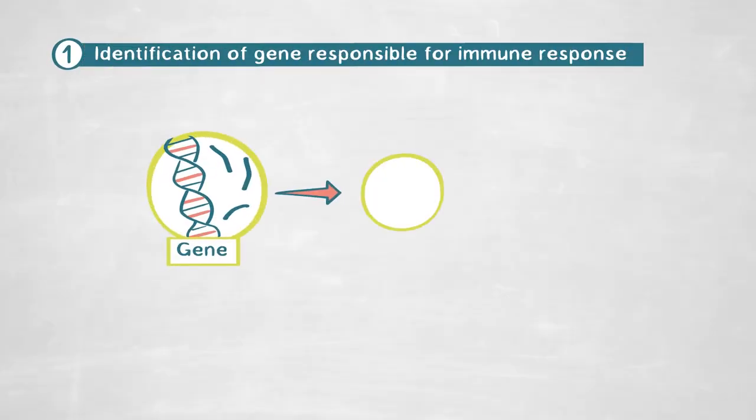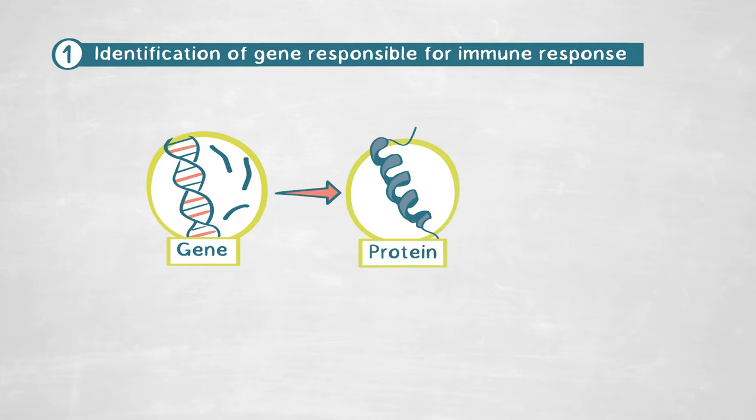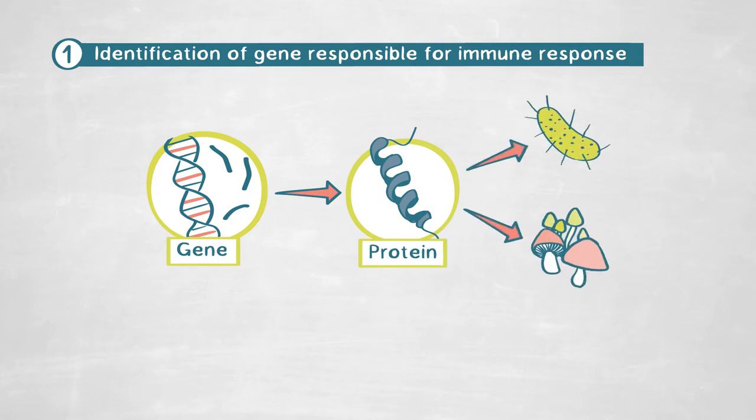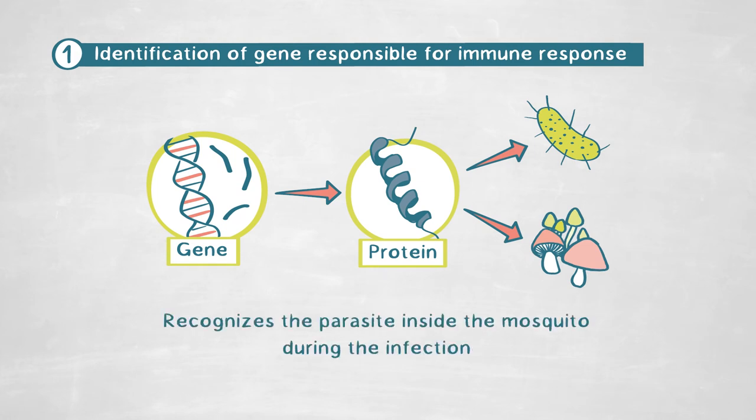What we found in the lab was a particular gene conserved from bacteria to animals and present in mosquitoes, which is involved in regulating the immune response of mosquitoes. This gene encodes a protein that can directly bind to pathogens such as bacteria and fungi. We found that it also recognizes the parasite inside the mosquito as they pass through the midgut epithelium during infection.